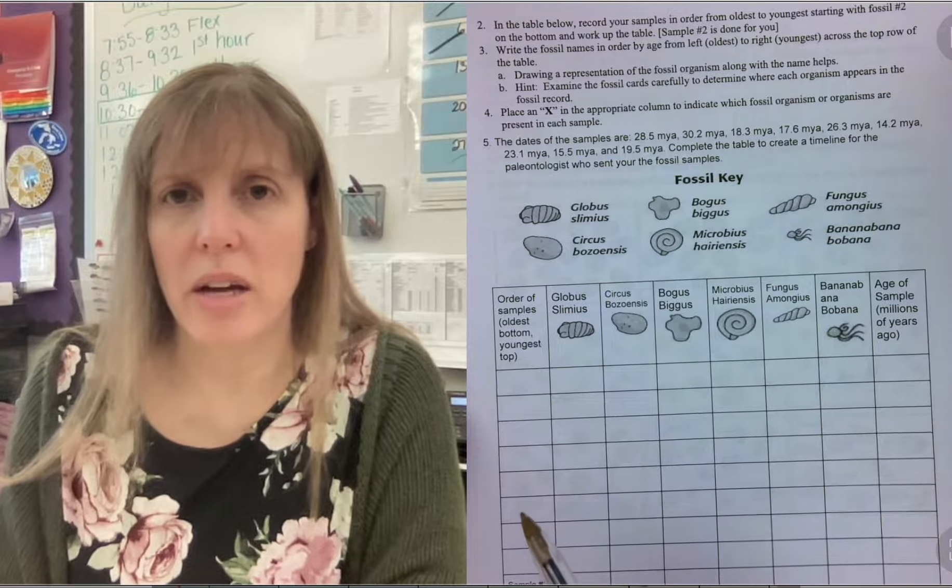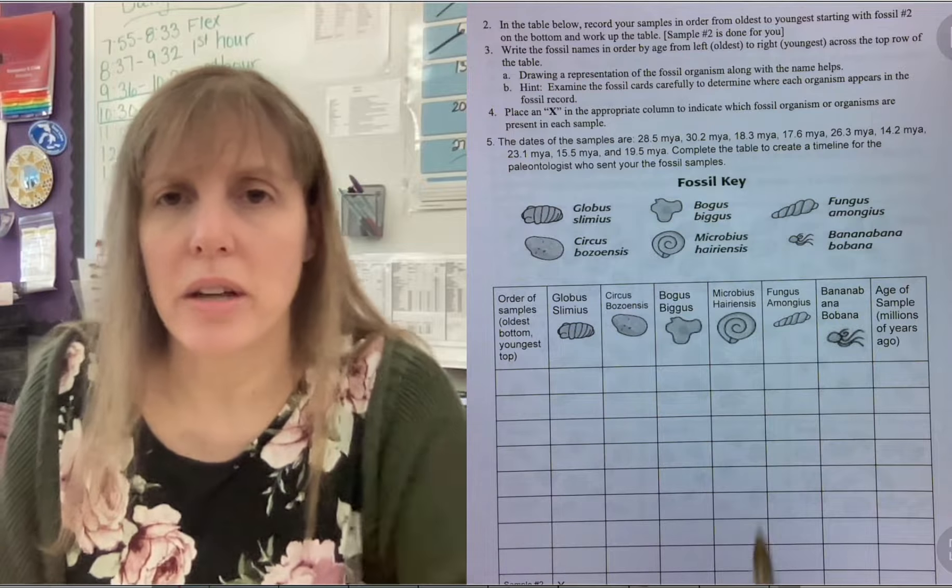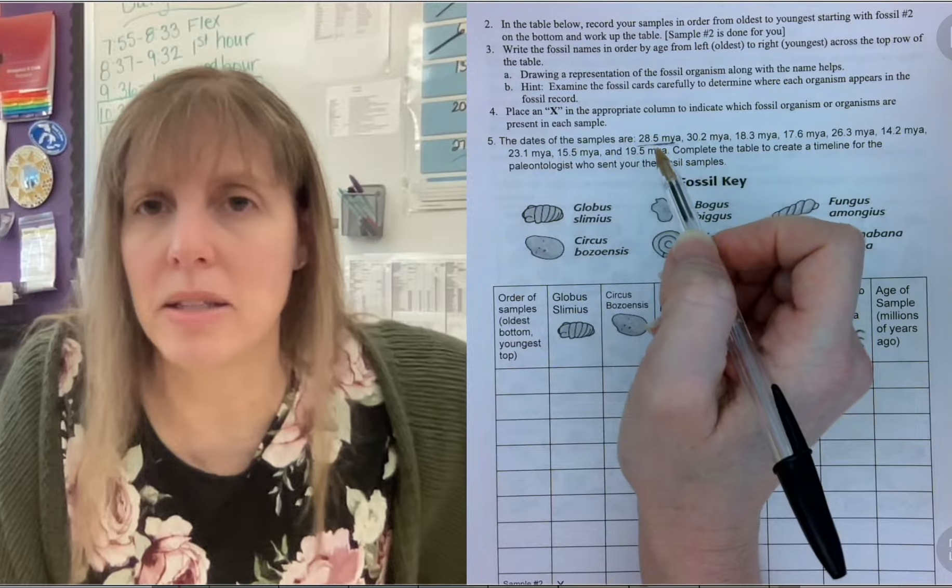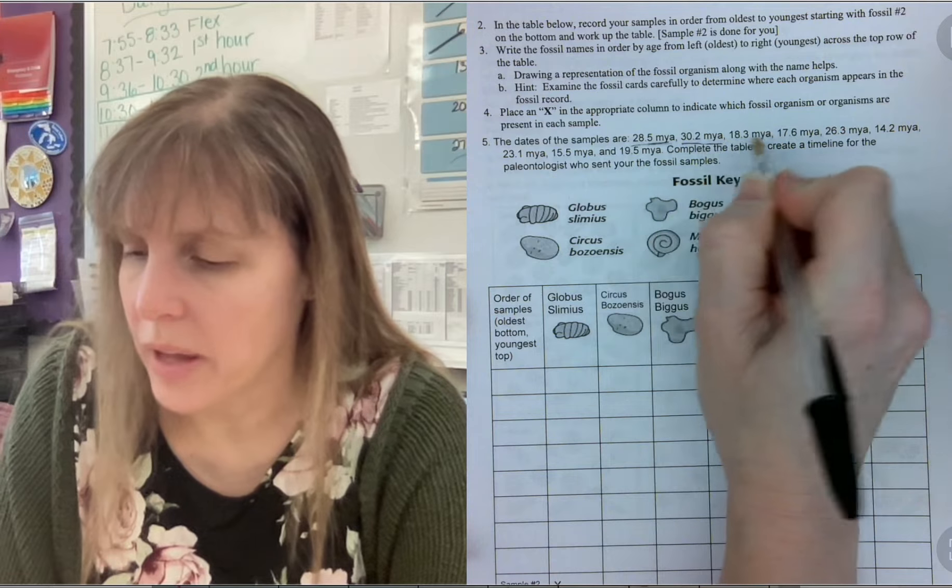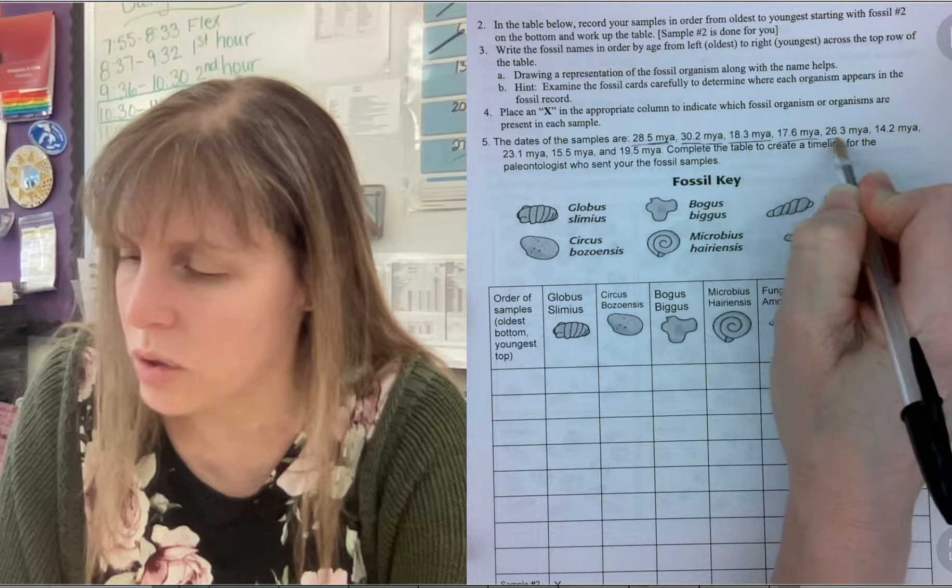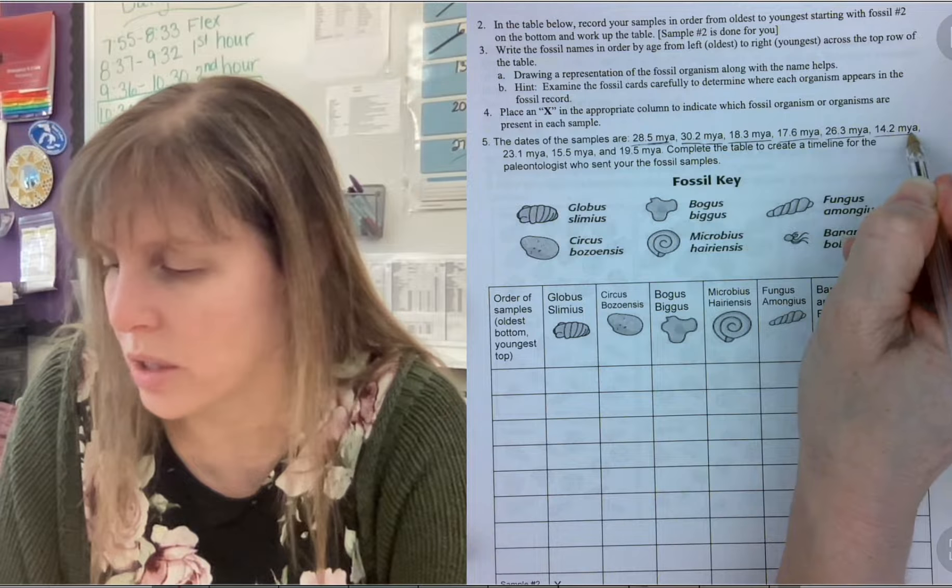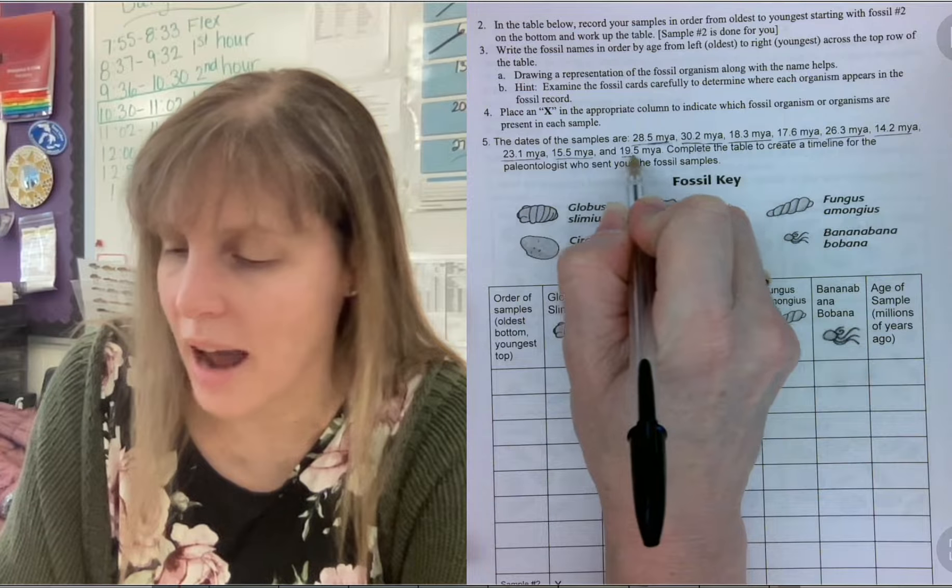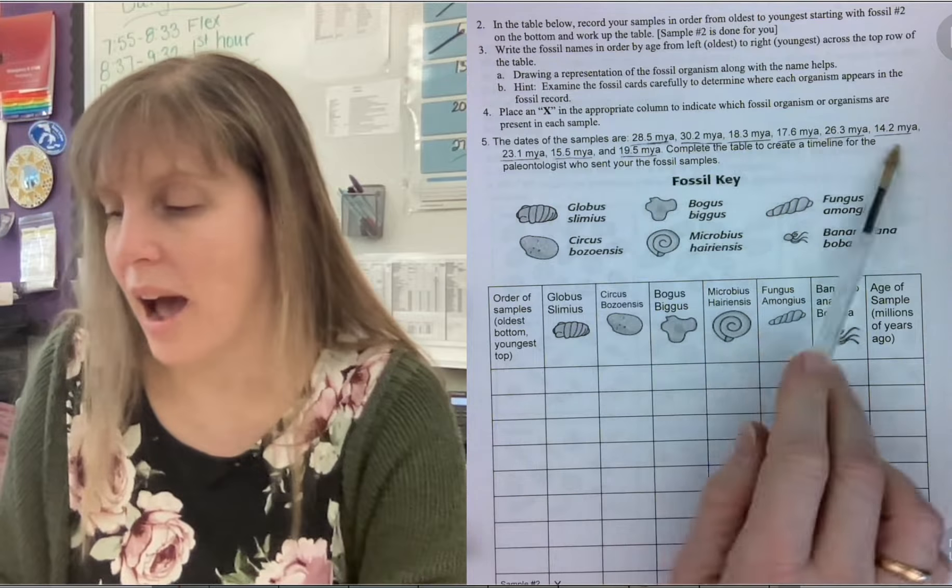These are the dates that you're going to use right here. 28.5 MYA. MYA means millions of years ago. 30.2, 18.3 million years ago, 17.6 million years ago, 26.3 million years ago, 14.2 million years ago, 23.1 million years ago, 15.5 million years ago, and 19.5 million years ago. There are nine of these, right?